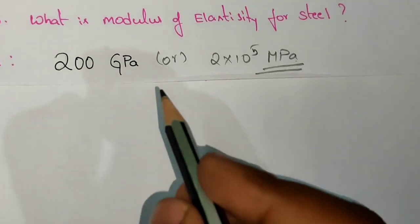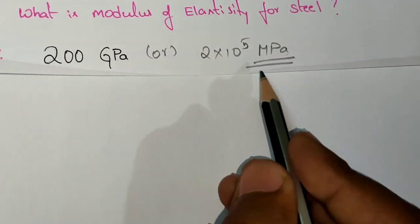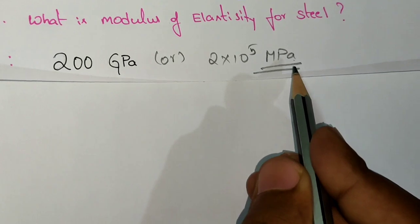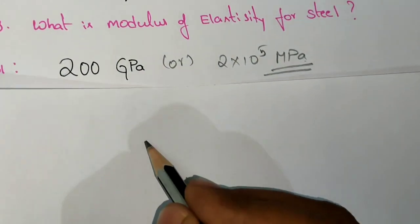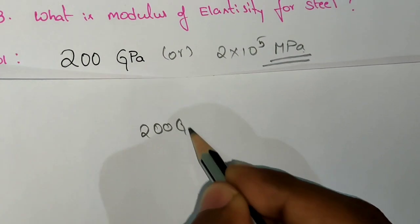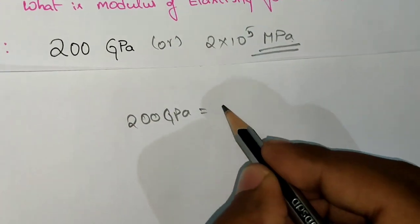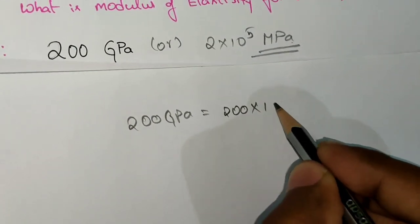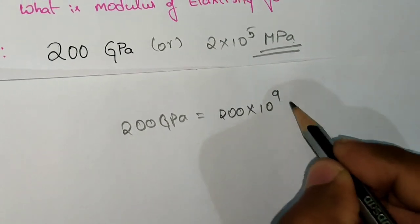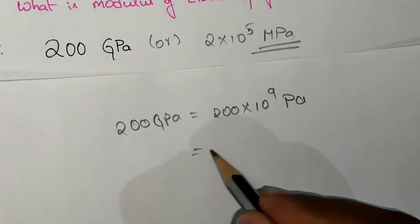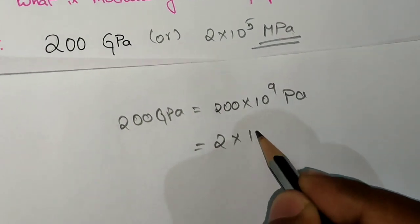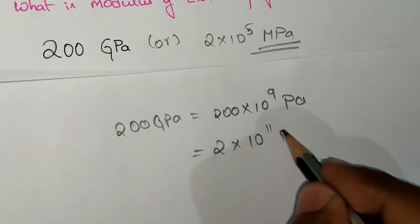Now, 200 gigapascals - how does it become 2×10^5 megapascals? Let me explain. 200 gigapascals can be written as 200×10^9 Pascals, which is 2×10^11 Pascals.